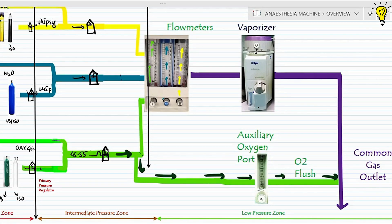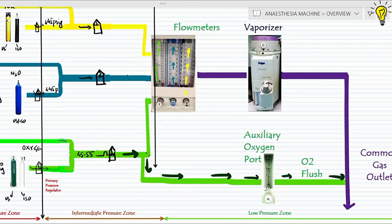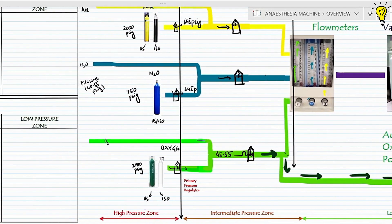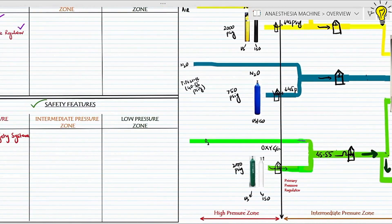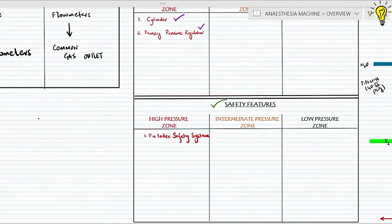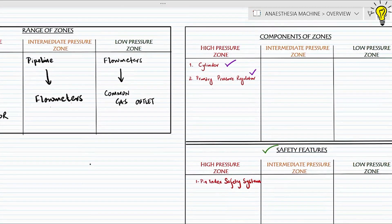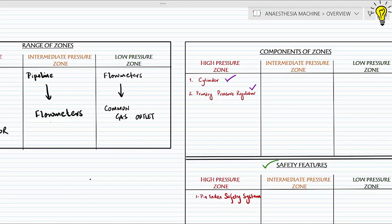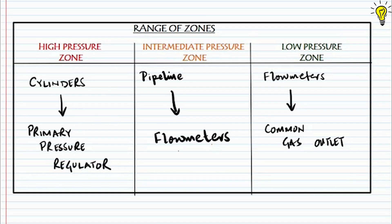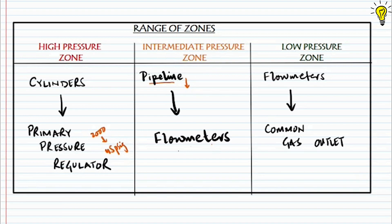Welcome back. Today it's all about the intermediate pressure zone of the anesthesia machine — we will integrate the flowcharts with practical videos of the machine. We discussed in the last episode how the primary pressure regulator reduces the cylinder pressures to 45 psig, beyond which the intermediate zone begins. This zone ranges from the pipeline supply all the way till behind the flow meters.